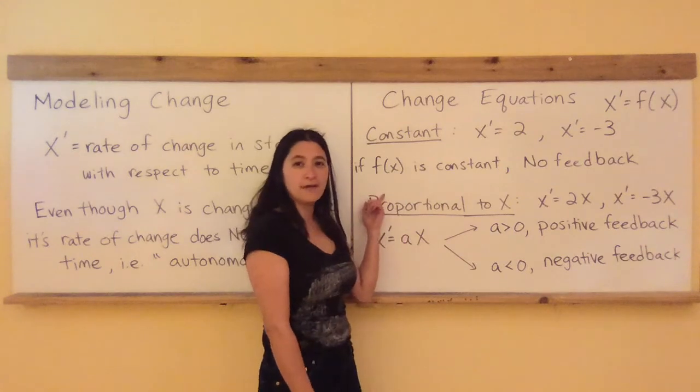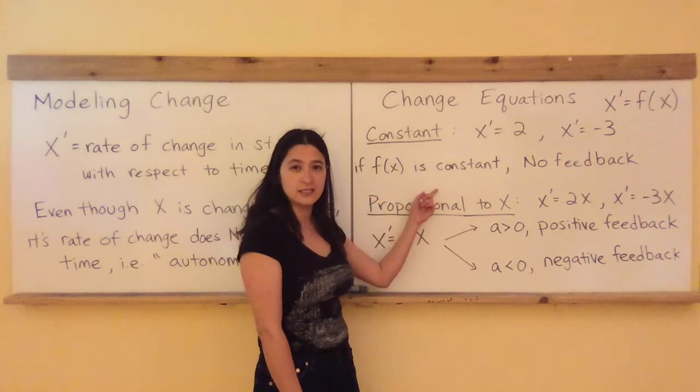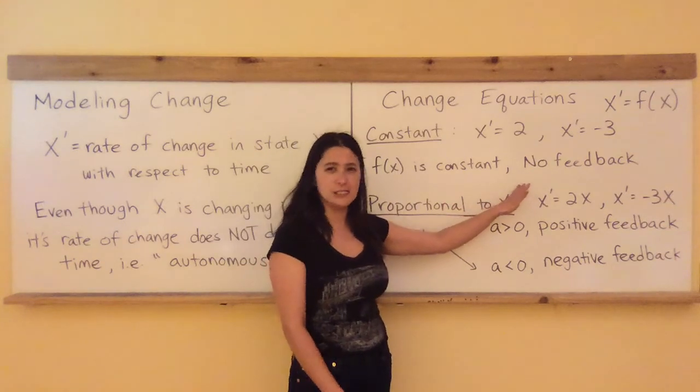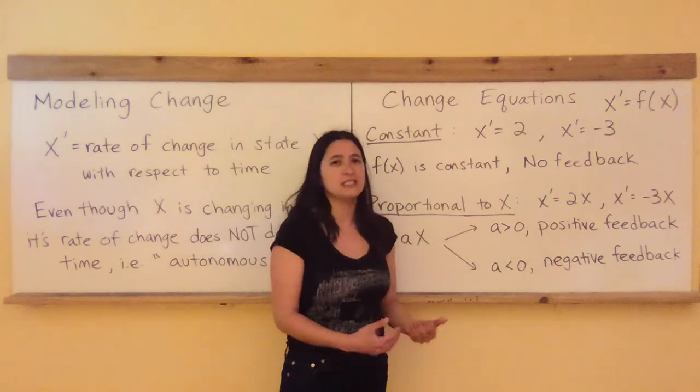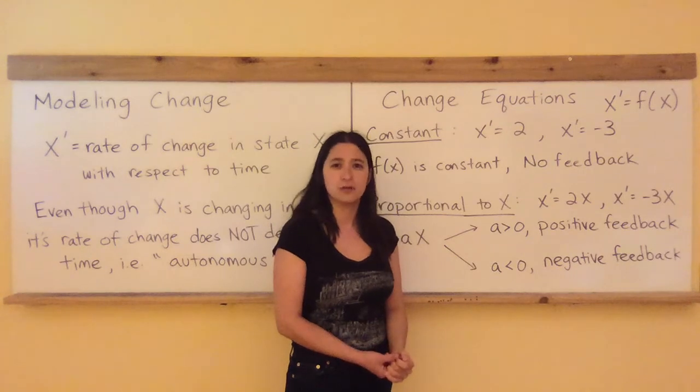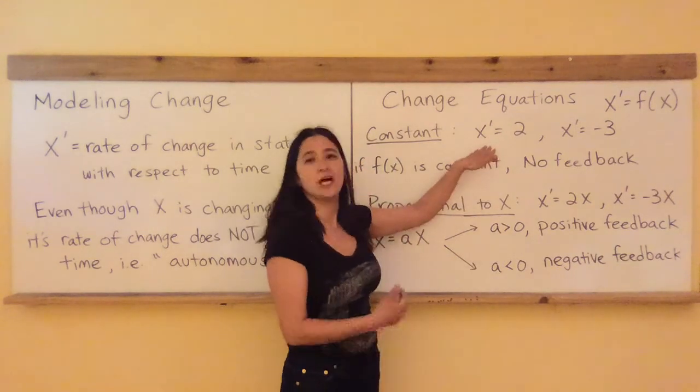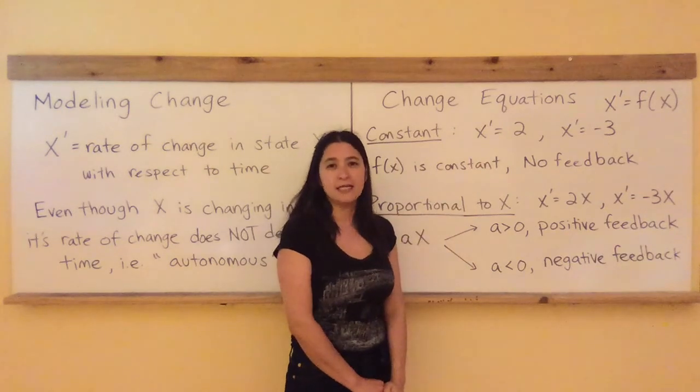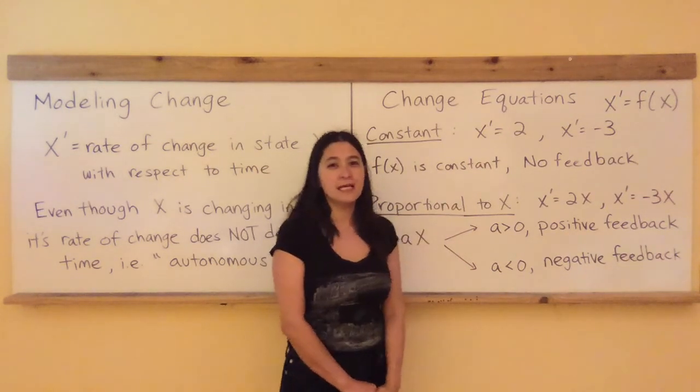The thing to note is that if f of X is a constant like in these examples, there's actually no feedback. X is not looking at what its current state is in determination of how fast or slow it should change. It just does this constant same amount of change every single time. That's tied to linear behavior.